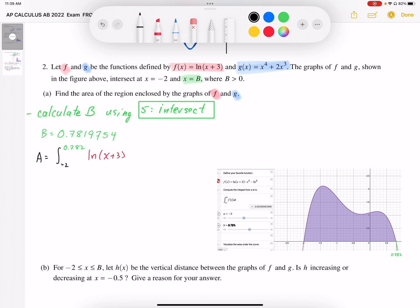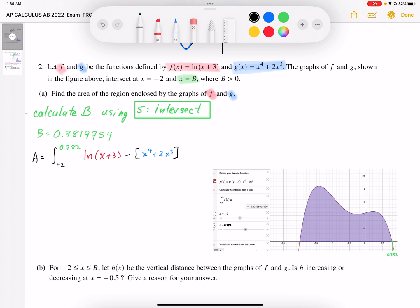And then we're going to subtract the lower function, which is going to be x^4 + 2x^3. And we're going to give that thickness of dx. And from there, we're going to graph and integrate it.